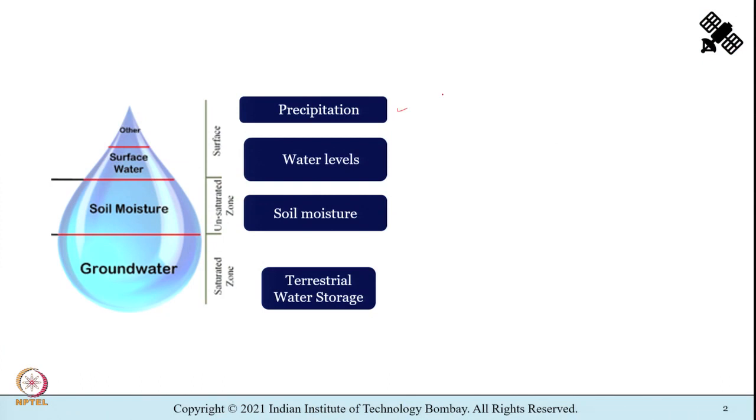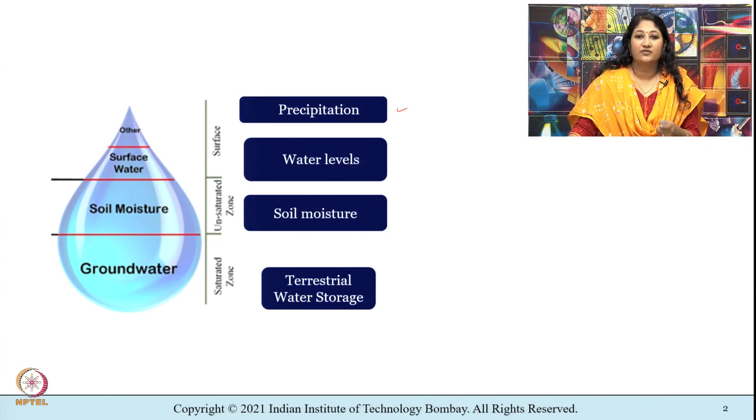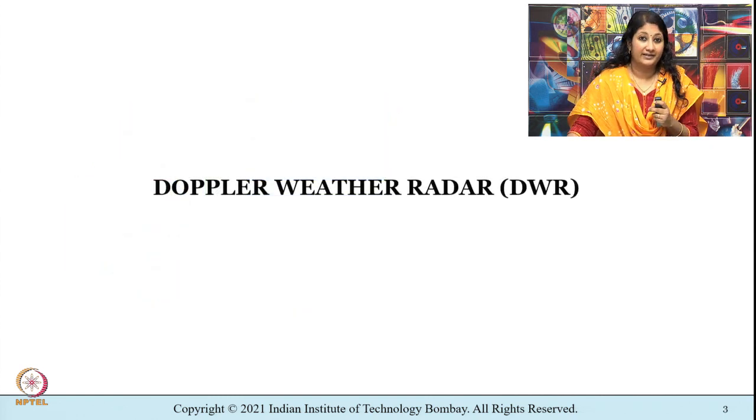Hello, we are in the third lecture of the fourth module. In the last lecture we were discussing how precipitation can be estimated from radar remote sensing, and in particular we were trying to understand satellite-borne radars. We also discussed a few indices and metrics derivable from a contingency table to help in the comparative assessment of quality of precipitation from satellites. Today's lecture will cover Doppler weather radars.